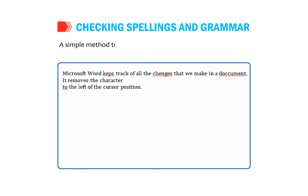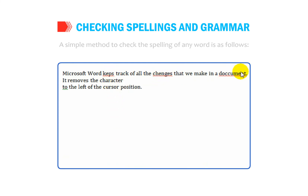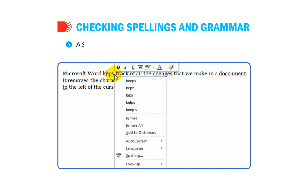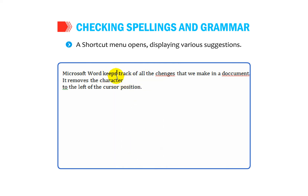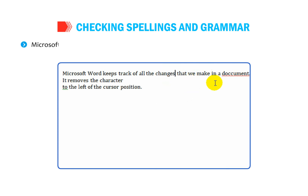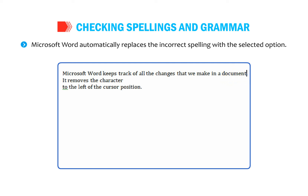A simple method to check the spelling of any word is as follows: right click on the word underlined with the red wavy line. A shortcut menu opens displaying various suggestions. Select the correct spelling from the suggestions list, and Microsoft Word automatically replaces the incorrect spelling with the selected option.